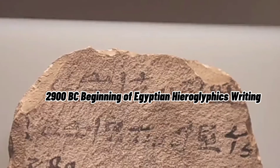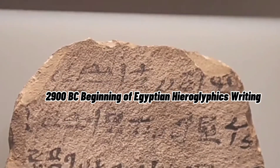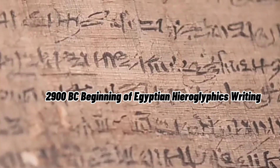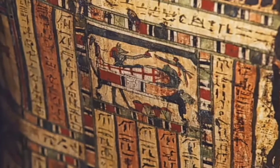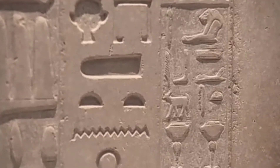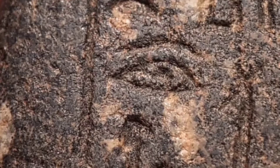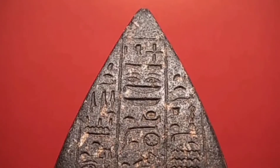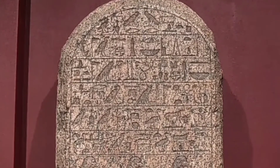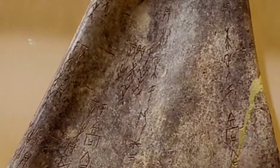2900 BC: Beginning of Egyptian Hieroglyphic Writing. Egyptian Hieroglyphic writing is among the oldest writing systems in the world. Ancient Egyptians knew it as the language of the gods.